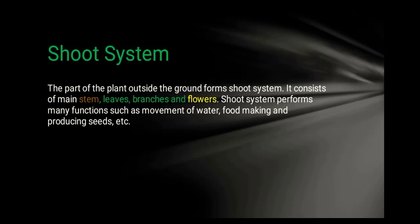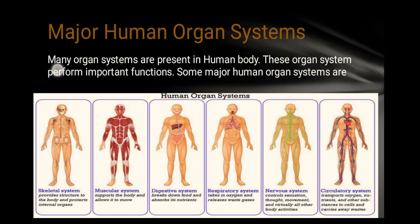Major human organ systems: many organ systems are present in the human body and these organ systems perform important functions. The skeletal system supports the body. The muscular system supports the body and allows movement and attachment. The digestive system is responsible for food digestion.